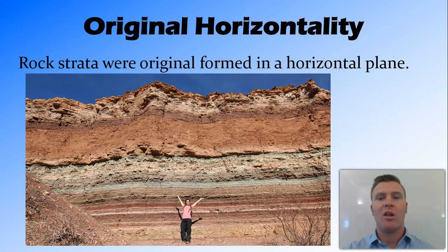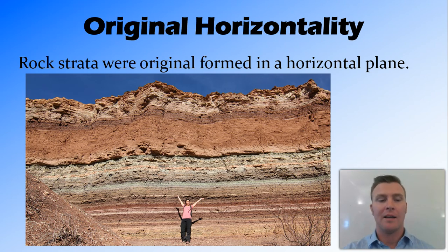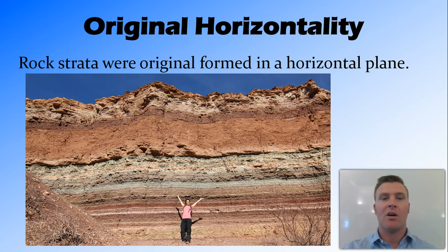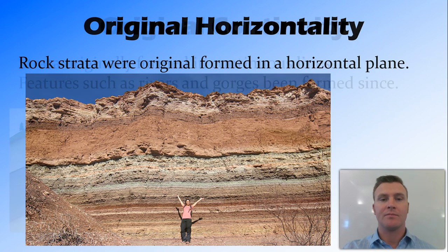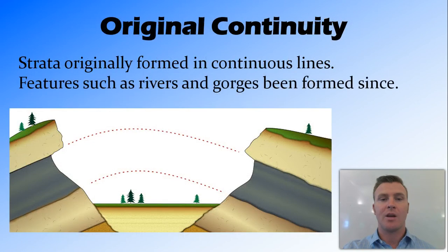Original horizontality means that when rock strata were formed, they were always formed in the horizontal plane. You can see these rock strata here as nice straight lines all running horizontally — this is how these strata would have originally formed.